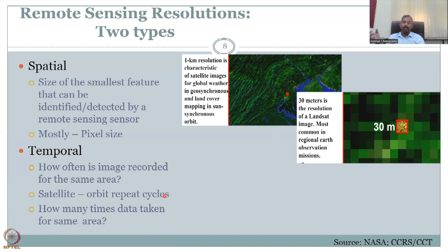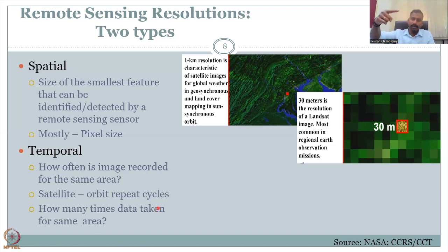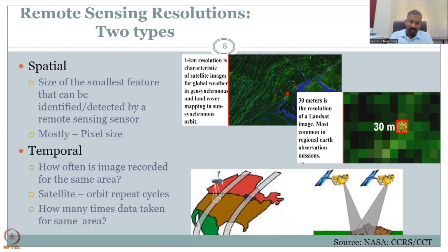Temporal resolution is how often images are collected for the same area. For example, if I monitor a plant and take an image every month, the temporal resolution is one month; if I take it daily, it is daily temporal resolution. A satellite follows repeat orbit cycles — the time taken for the satellite to return to the same orbit defines the temporal resolution. So how often data is taken for the same area is the temporal resolution.